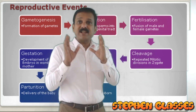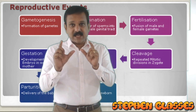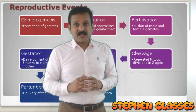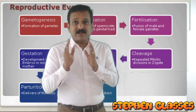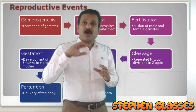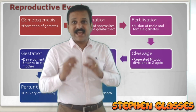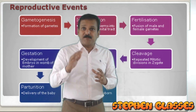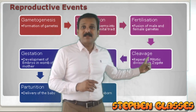After fertilization, a single cell called the zygote is formed. This zygote will undergo repeated mitotic divisions. These repeated mitotic divisions in the zygote are called cleavage. The single cell develops into a two-cell stage, then four-cell stage, then eight-cell, sixteen, thirty-two, sixty-four — and so on. These repeated mitotic divisions in the zygote are termed cleavage.